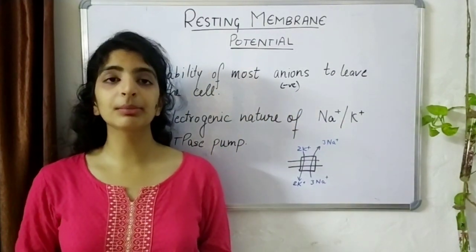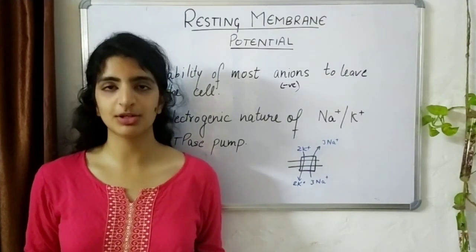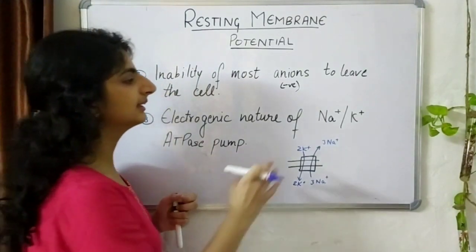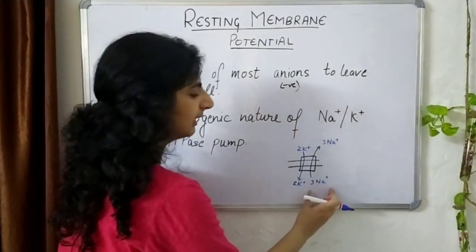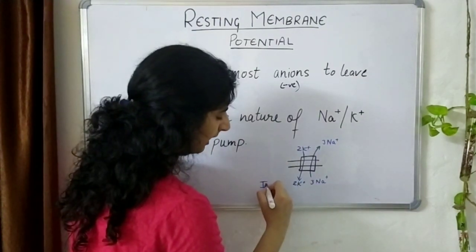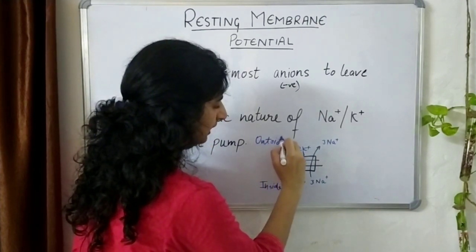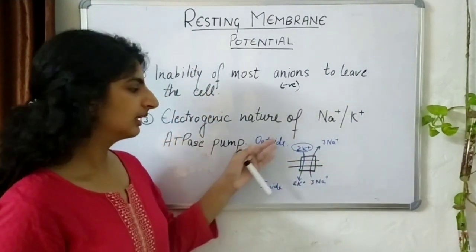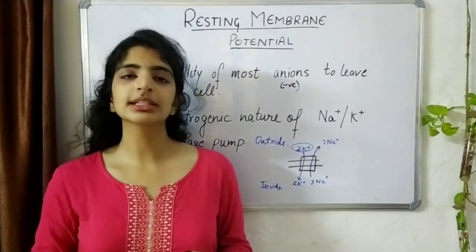These anions are mostly membrane integral proteins that are embedded and thus cannot follow any of the positive ions moving out of the cell. Thirdly, there is the sodium-potassium pump. It takes three sodium ions from inside the cell and pumps them to the outside in exchange for two potassium ions that enter the cell.